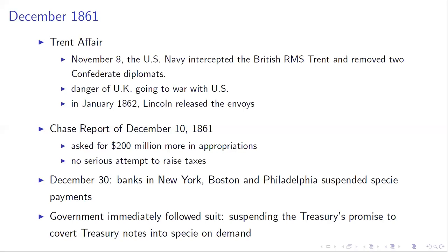Chase comes back to Congress in December and says he needs $200 million more in appropriations. When asked how to raise it through taxes, he has no proposal — he says 'we're just going to borrow it all.' This starts a financial crisis. By December 30th, banks in New York, Boston, and Philadelphia suspend specie payment — if you have a bank note, you can no longer go to the bank and redeem it for gold or silver. The government immediately follows suit, suspending the Treasury's promise to convert treasury notes into gold or silver on demand.